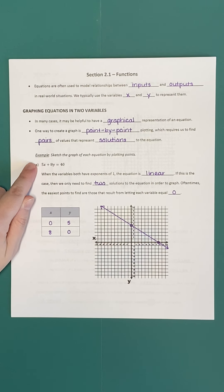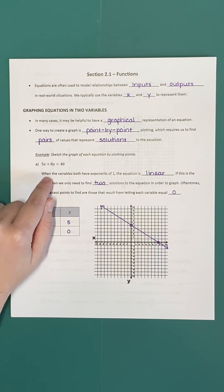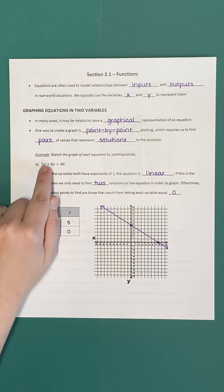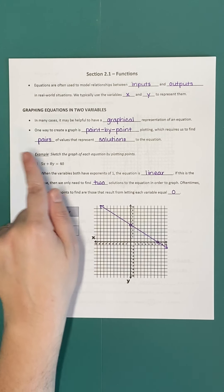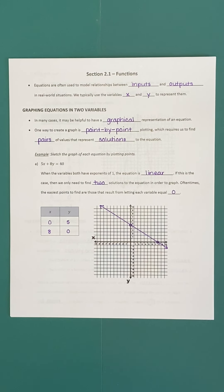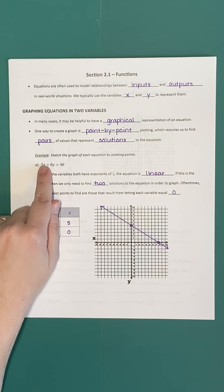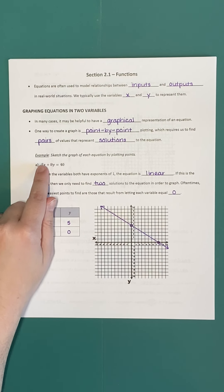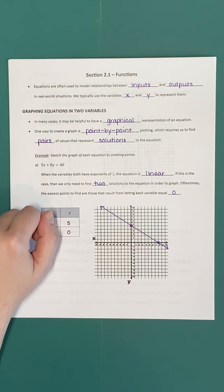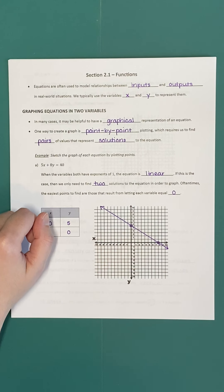The ordered pairs represent solutions to our equation — combinations of x and y that make the equation true. Let's start with a basic example: suppose our equation is 5x + 8y = 40. This equation models the relationship between x and y. Any value of x and y that in combination make this equation true represent a solution. This particular equation is what we call a linear equation — we know it's linear when both exponents are 1. Since neither variable has an exponent written, they both have an understood exponent of 1.